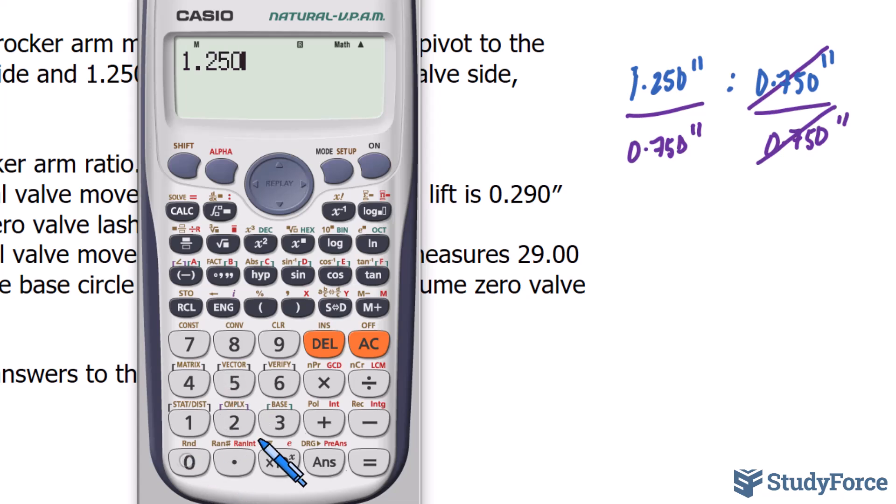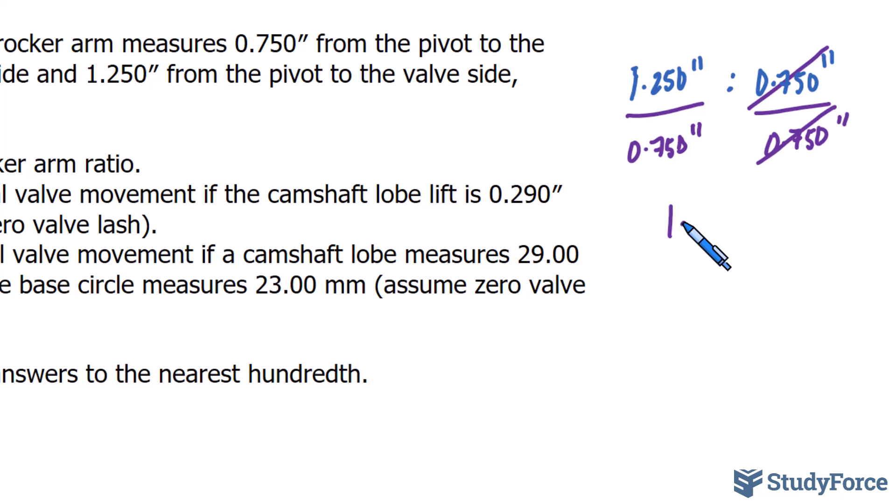1.250 divided by 0.750, that amounts to roughly 1.67. So we have a new ratio that is 1.67 to 1.